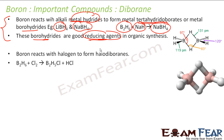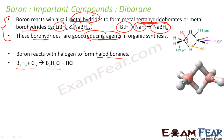Boron also reacts with halogens to form haloboranes. For example, reacting B2H6 with chlorine gives B2H5Cl. This is a replacement reaction — chlorine replaces one of the hydrogen atoms in diborane.